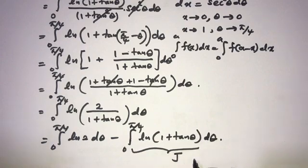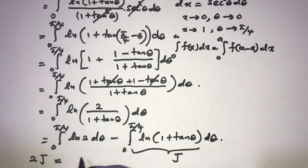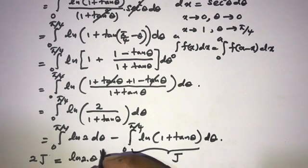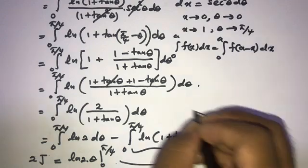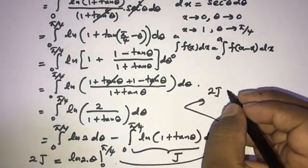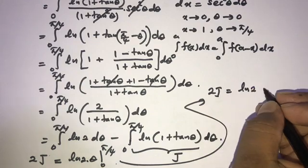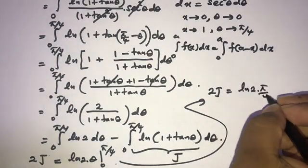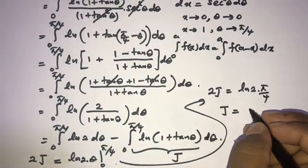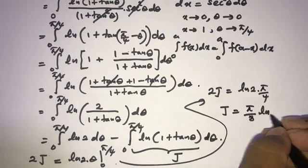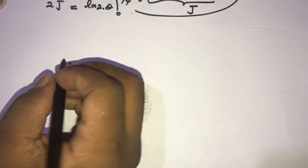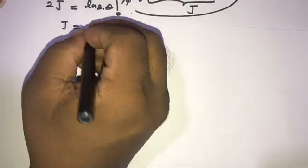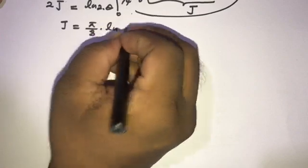So we can simplify: the integral from 0 to π/4 of natural log of (1 + tan(θ)) plus the integral from 0 to π/4 of natural log of 2 over (1 + tan(θ)) dθ. By properties of natural log, this gives 2J equals natural log of 2 times θ evaluated from 0 to π/4. So 2J = ln(2) · (π/4 − 0) = ln(2) · π/4, therefore J = π/8 · ln(2).